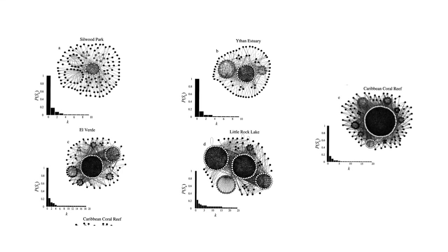This illustration of the food web across a number of different ecosystems illustrates prominent clustering. The food web structure and sub-web frequency distribution for a number of different ecosystems is shown, including a park, estuary, lake, and coral reef — all exhibiting a high clustering coefficient.